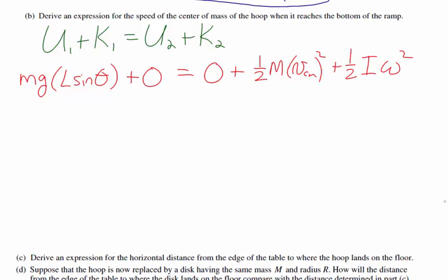We make a couple of substitutions. The rotational inertia I is MR squared. We also use the relationship between the velocity of the center of mass and omega: since v_cm equals R times omega, omega equals v divided by R. Because omega is squared, we square that quantity. Plugging in those values: MgL sine theta equals one-half M times v_cm squared, plus one-half times MR squared times (v/R) squared.